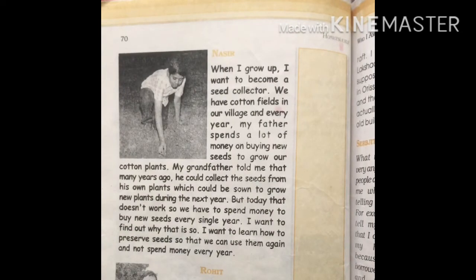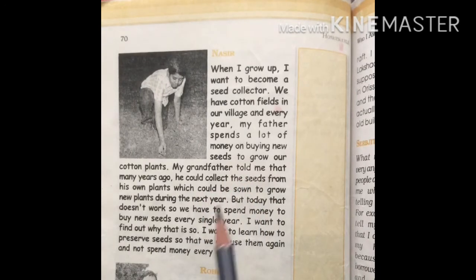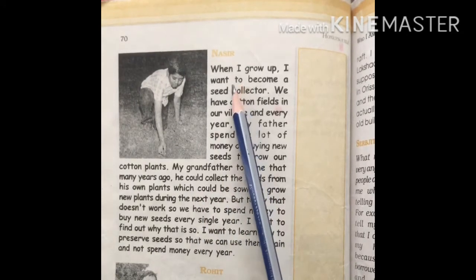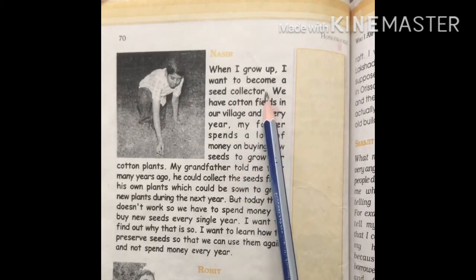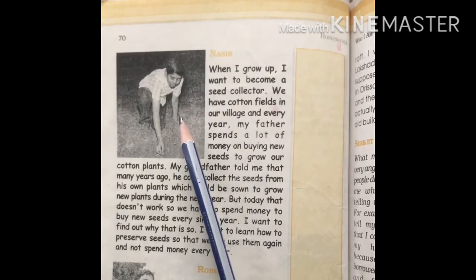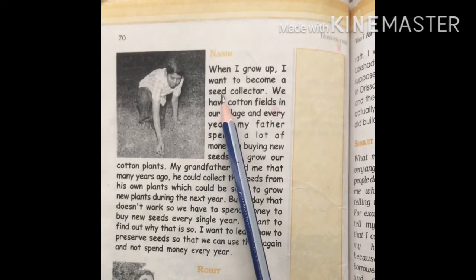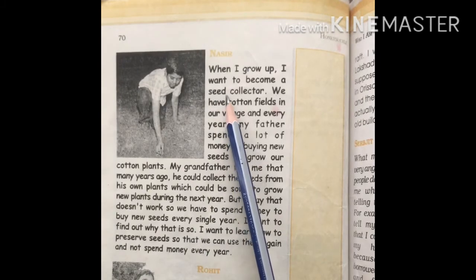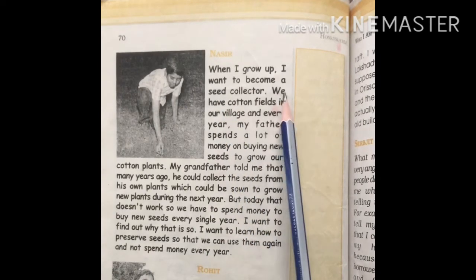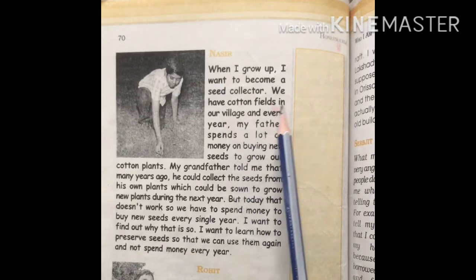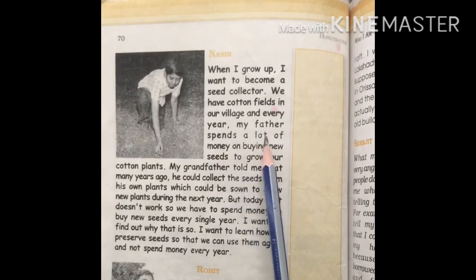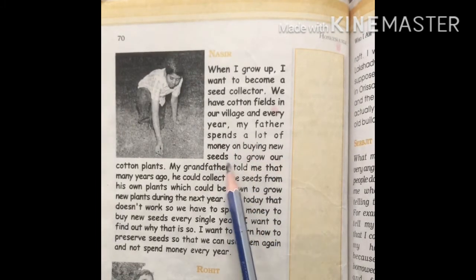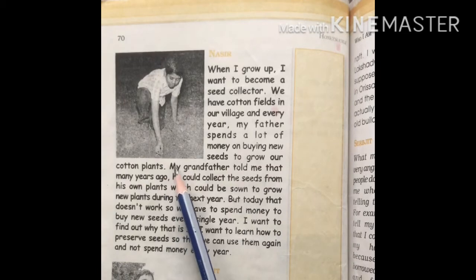Now there is the story of Naseer. When I grow up, I want to become a seed collector — so Naseer wants to be a seed collector. Seed मतलब grains — जो crop होता है, उसके जो seed होते हैं वो. We have cotton fields in our village and every year my father spends a lot of money on buying new seeds to grow our cotton plants.